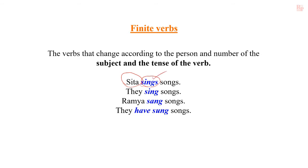Like that, in the next sentence, we just use 'sing' because the subject is third person plural. We need not add any 's' or 'es' to the root form of the verb. And in the next sentence, we use the verb 'sang'. Here it is in the past tense. That's why we use 'sang'.